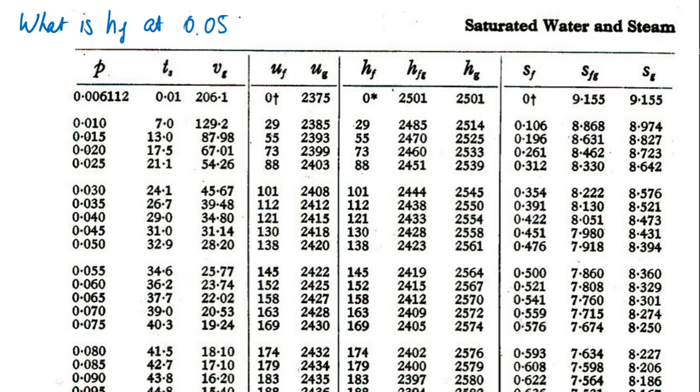If we look at our first example, we're going to calculate what is HF, what is the fluid enthalpy at 0.057 bar for saturated water. We can see that 0.057 bar fits between these two values, and so the enthalpy will be between 145 and 152.